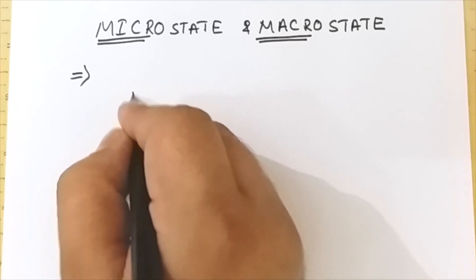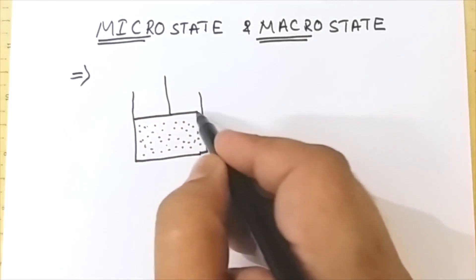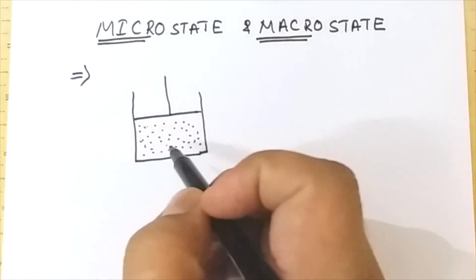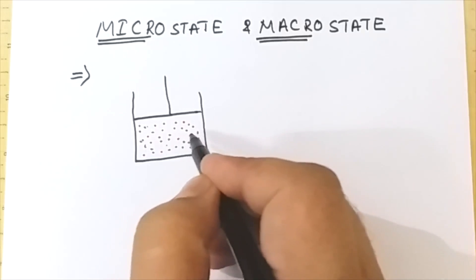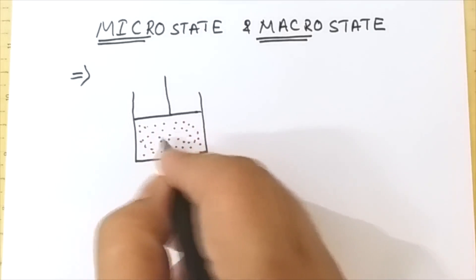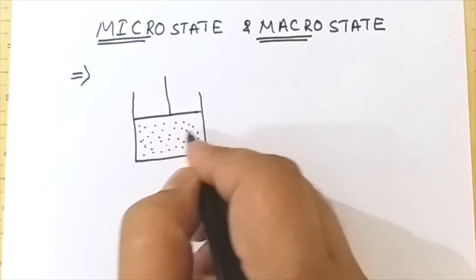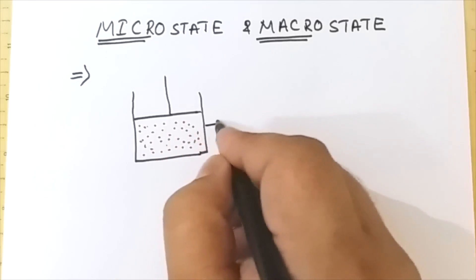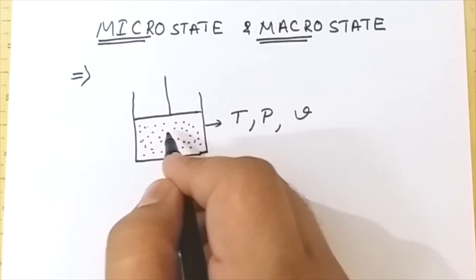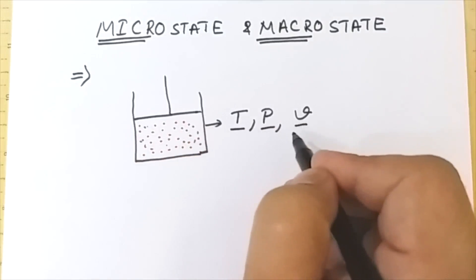Suppose we have a cylinder filled with gas. The gas consists of a large number of particles that are continuously in motion, so their energy, momentum, and position are continuously changing, giving different arrangements at different moments in time. These different arrangements are referred to as microstates. The properties due to these particles — such as temperature, pressure, and volume — remain the same irrespective of the arrangement of particles, and hence these properties are known as the macrostate of the system.